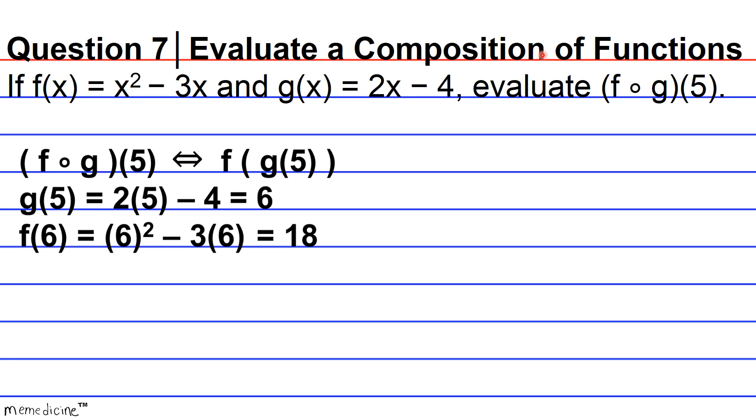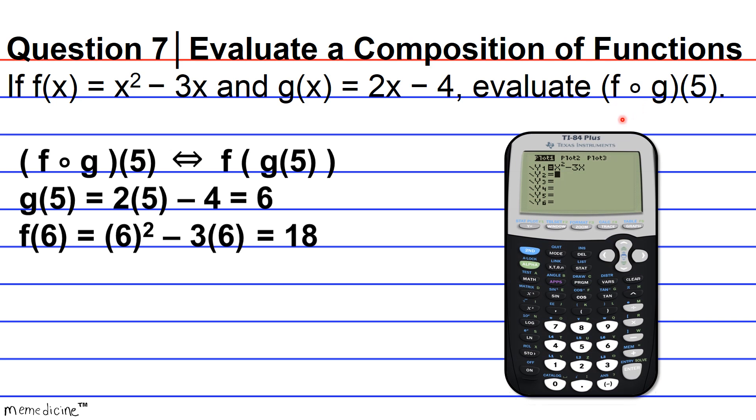Expediting the evaluation of this composition of functions could also have been done with your graphing calculator. So what we're going to do is basically enter f(x) and g(x) into our y equals equation editors on our graphing calculators. And then what we're going to do is input the composition of these functions in the third slot for our y equals equation editor. So let's go ahead and see what that looks like. So first we basically enter x² − 3x and we're going to let y₁ equal f(x). Now we enter 2x − 4. So basically we're letting y₂ equal g(x).